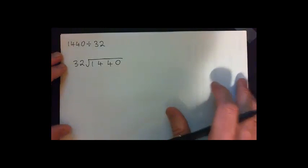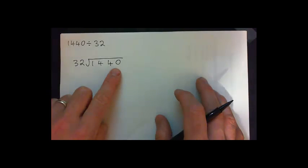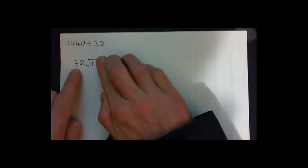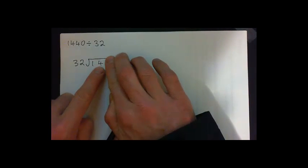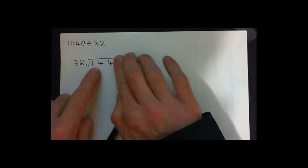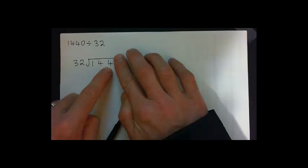The first step is to say, 32 goes into this how many times? The first step is to think, well, it doesn't go into one. One's too small. It doesn't go into 14. 32 is a bigger number than 14. So we've got to say, 32 goes into 144 how many times?